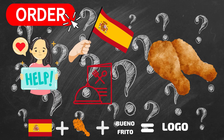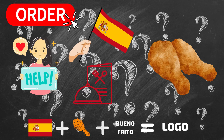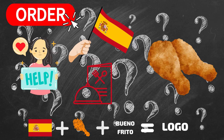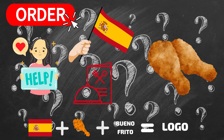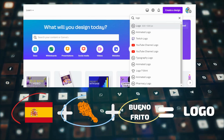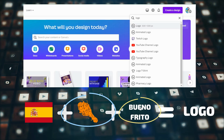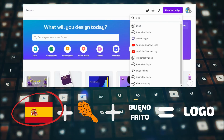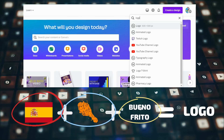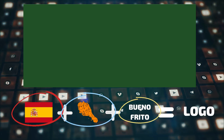We're going to design a logo for a restaurant opening in Spain that serves fried chicken, and its name is called Bueno Frito — a Spanish name. So the key information we have is: Spain, fried chicken, and Bueno Frito.